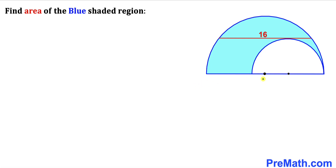Welcome to pre-math. In this video we have got small and large semicircles put together as you can see in this diagram, such that the chord of the larger semicircle is tangent to the smaller semicircle, and the length of this chord is 16 units. We are going to calculate the area of this blue shaded region.